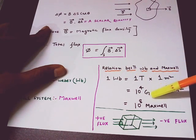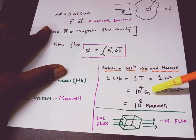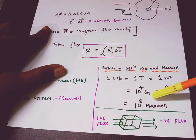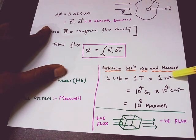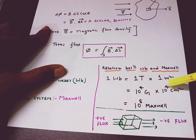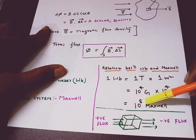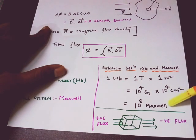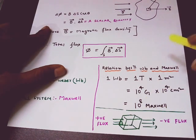Now, one Tesla is equal to 10 to the power 4 Gauss, which is the CGS unit of magnetic field. And one meter square — since one meter equals 100 centimeters, that is 10² centimeters — meter square becomes 10⁴ centimeter square. So one Weber equals 10⁴ times 10⁴ = 10⁸ Gauss·centimeter square, which is actually 10⁸ Maxwell.